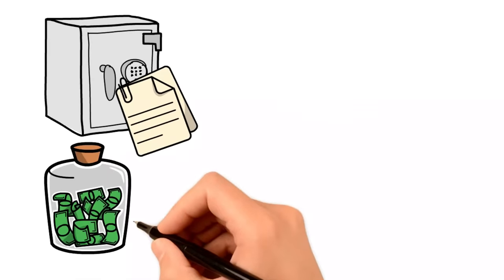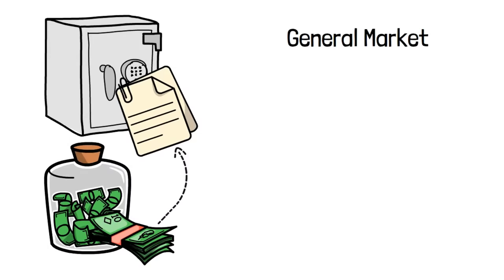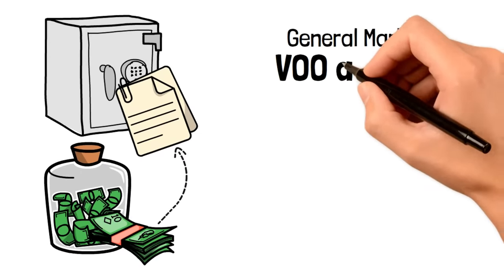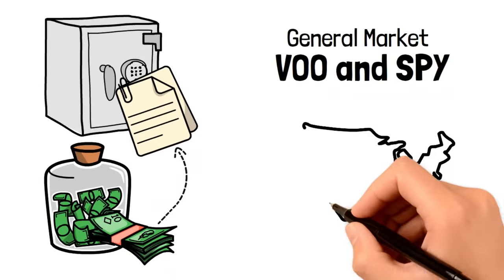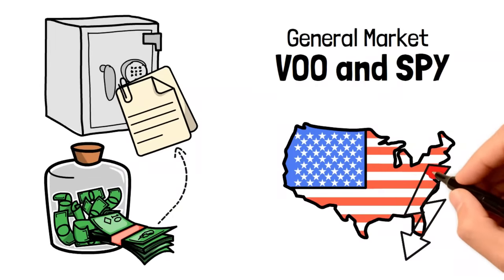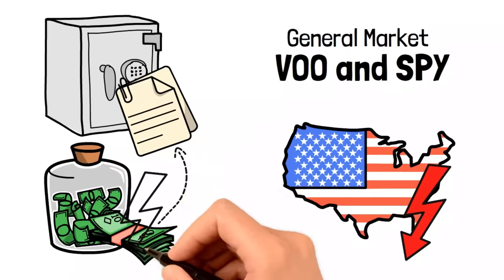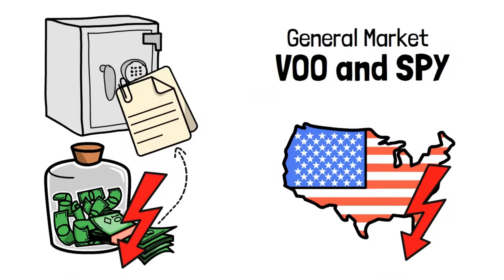As a start, you can go with the general market funds, which are safe and reliable. It's a great beginner option. Two of the most popular choices are VOO and SPY. These will give you exposure to the top 500 companies in the U.S. What you can expect is that if the U.S. economy rises, so will the fund, and if the economy goes down, then you can expect the fund to go down too.